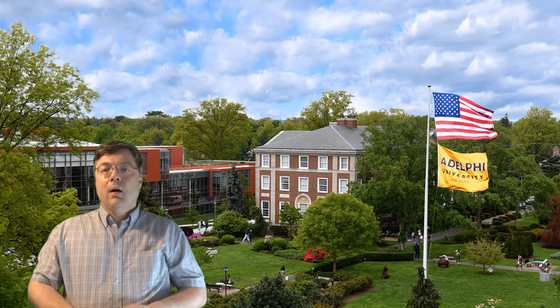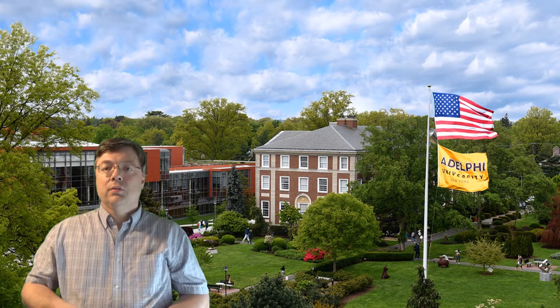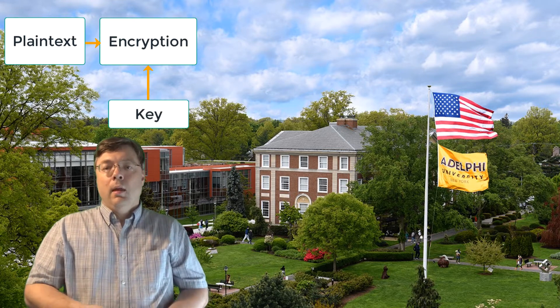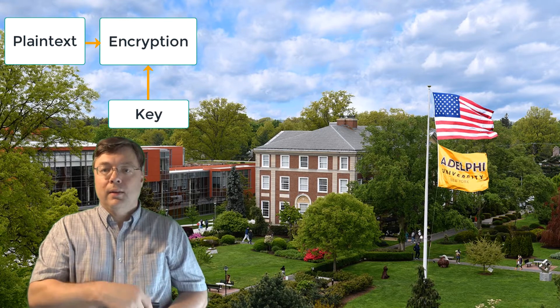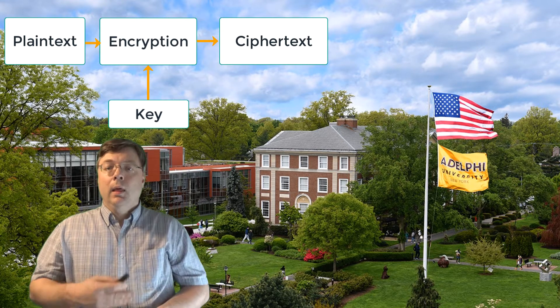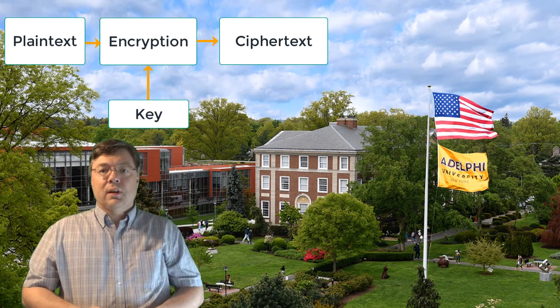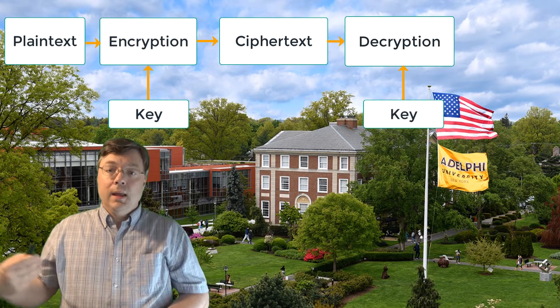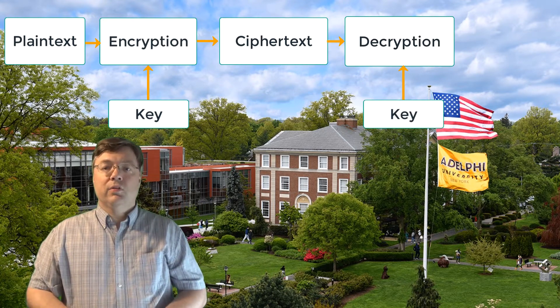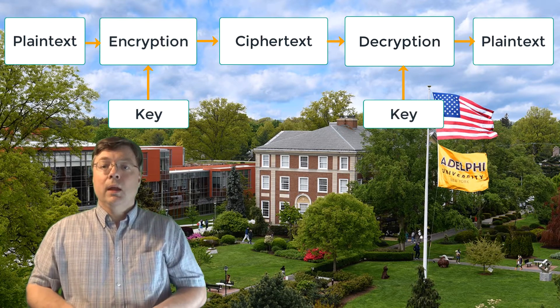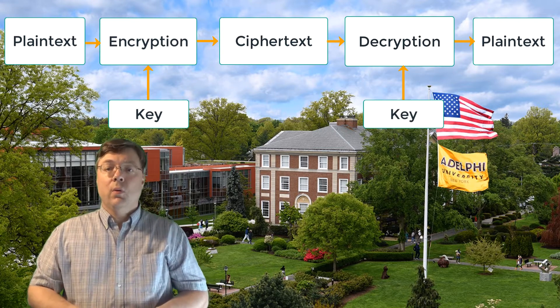In the previous video, I explained how the basic cryptographic process consists of a plain text — the original message that needs to be protected — used as input to an encryption process. That encryption process also takes a key. The two inputs are combined, and the plain text is transformed into ciphertext, which can be freely shared because it means absolutely nothing to anyone who looks at it. Then, as the ciphertext arrives at its destination, it is decrypted using a key, and those two combined yield the original plain text again. If we use a single key for encryption and decryption, we talk about symmetric encryption. If we use two different keys — one to encrypt and the other to decrypt — we talk about asymmetric encryption.